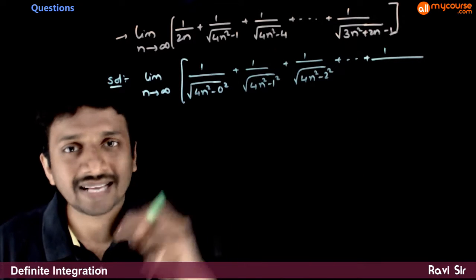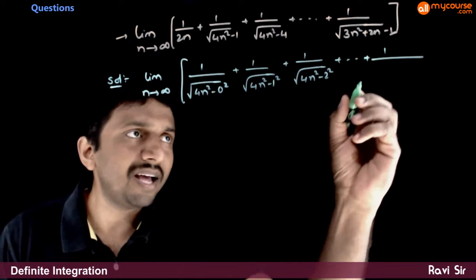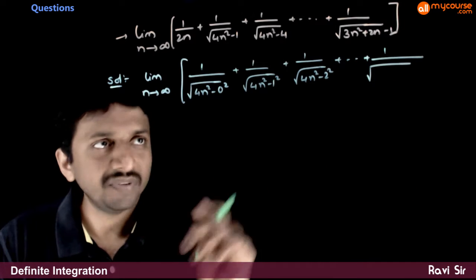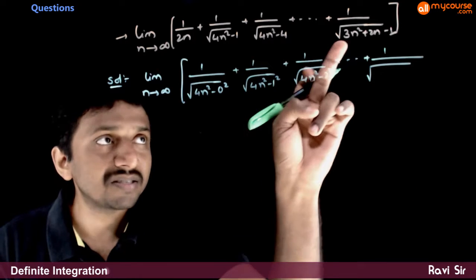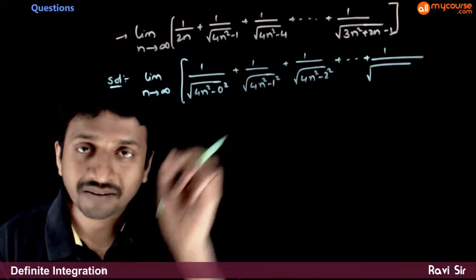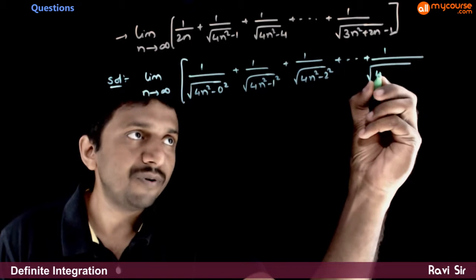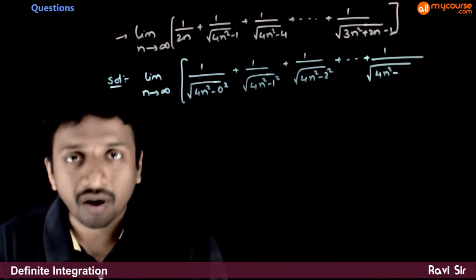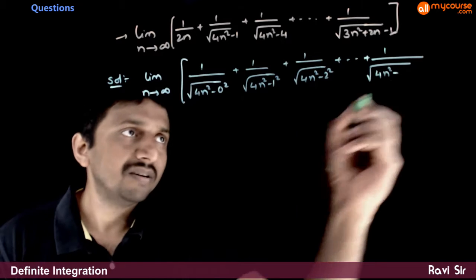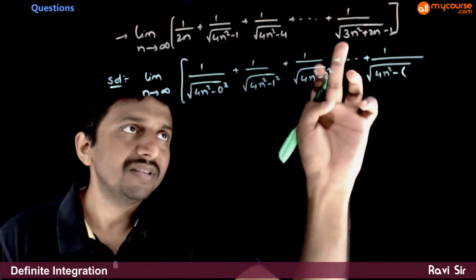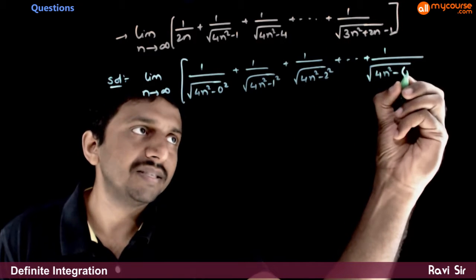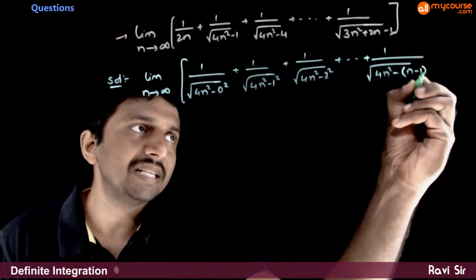What can you express the last term as? If you carefully observe the last term this is equal to... I will try to express this in the same pattern that is 4n square minus something square. What is this term? This is nothing but 4n square minus n minus 1 whole square.